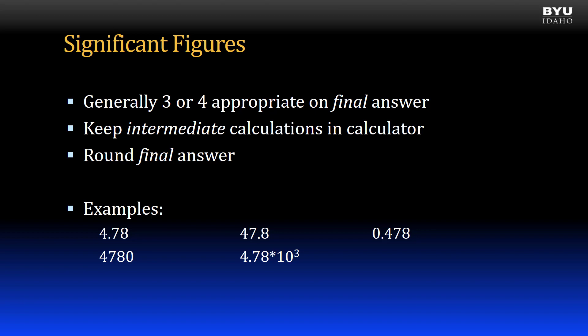The key is to keep all the available digits in your intermediate calculations in your calculator and then only round once on your final answer. If you round prematurely, you may distort your answer by several percent and the answer becomes unacceptable.